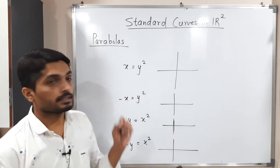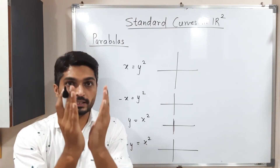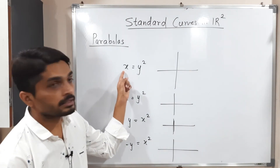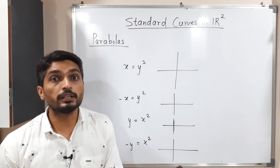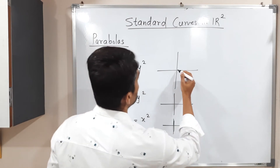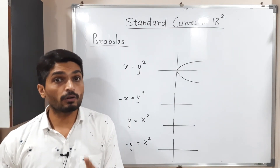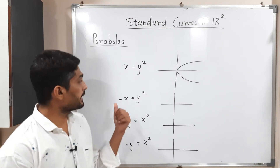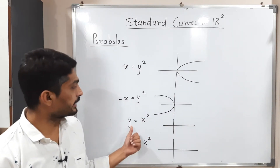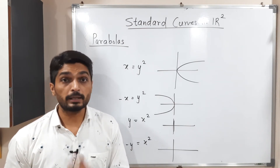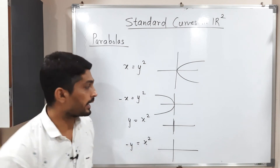Consider x = y². Here the power of x is one, that means x is the axis of symmetry — if you fold the parabola, it will match. Since x has a plus sign, it is symmetric about the positive x-axis, so the parabola opens in the positive x-axis direction. For −x = y², the axis of symmetry is still x, but with a minus sign, so the parabola opens to the left. For y = x², the power of y is one, so the axis of symmetry is the y-axis, and since y has a plus sign, the parabola opens in the positive y-axis direction.